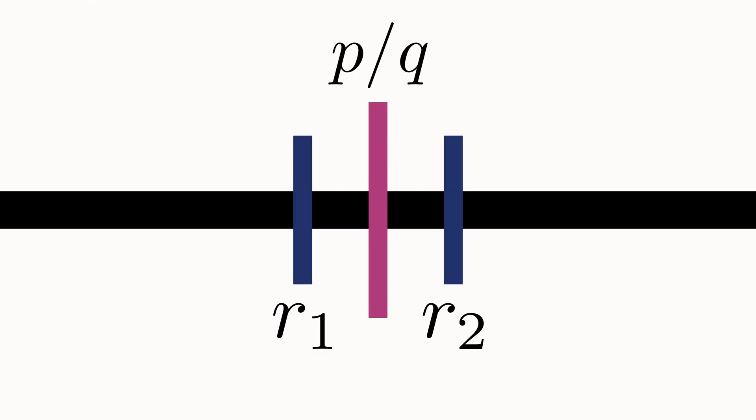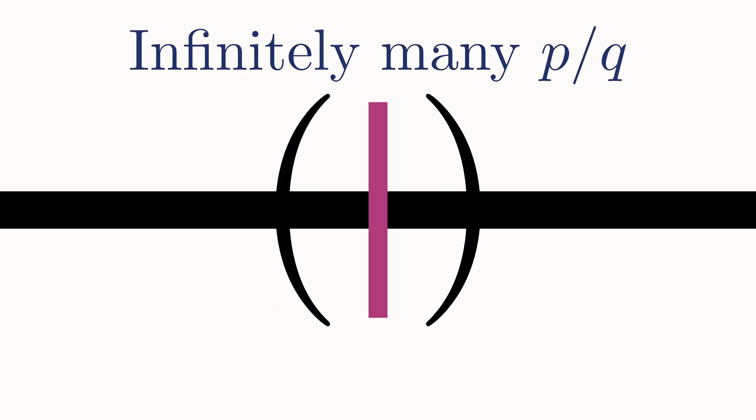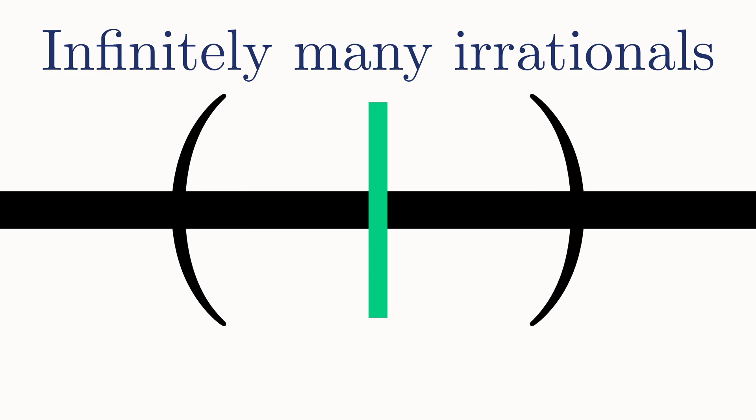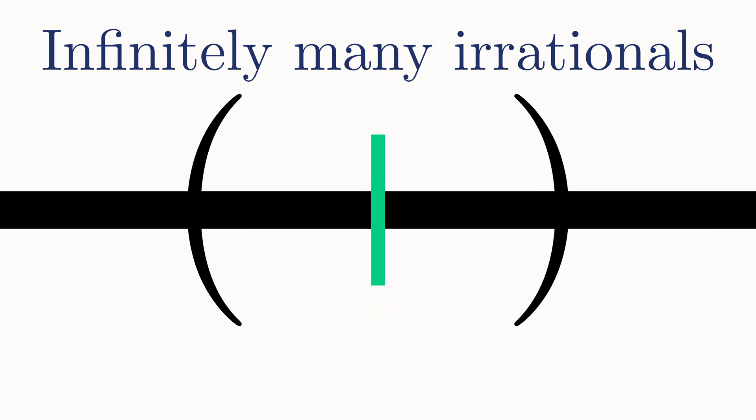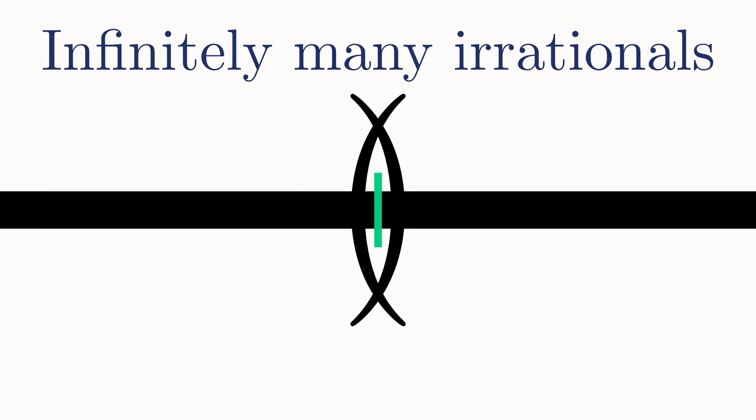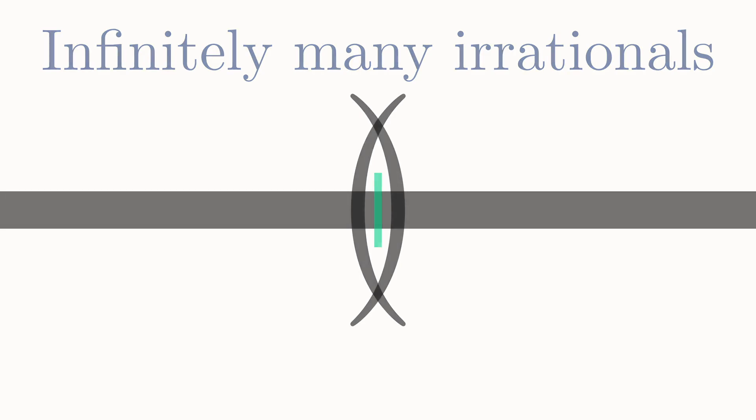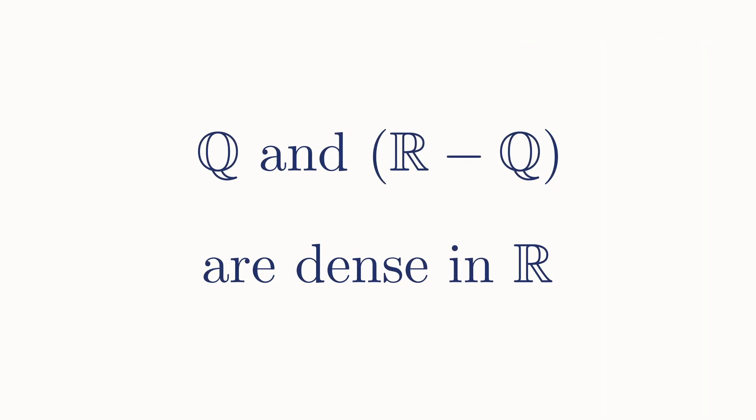In fact, not only can you find one rational number, but there are always an infinite number of them in the interval. And this is true no matter how small the interval is. Moreover, the same is true for irrational numbers. You can always find an infinite number of them inside of any interval of any length. So both the rational numbers and the irrational numbers are dense in the set of real numbers. Keep this in mind, as it will help you better appreciate the results we will arrive at by the end of this video.